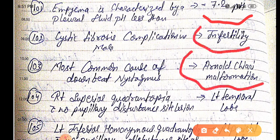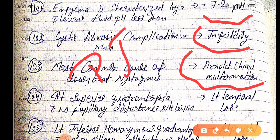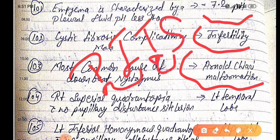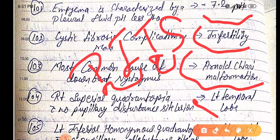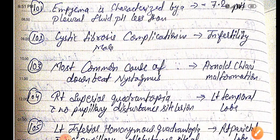Right superior quadrantopia with no pupillary disturbance — site of lesion: remember the PIDS mnemonic. If inferior, then parietal lobe; if superior, then temporal lobe. Since this is superior, the lesion is in the left temporal lobe — temporal is superior.